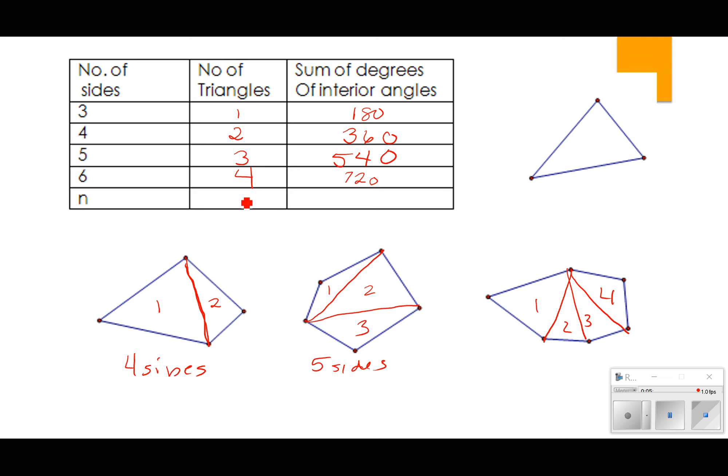So if you look at the pattern here, you notice that the number of triangles is always two less than the number of sides. So we can write that just represented by n minus 2. And then basically all I've done then is multiply the number of those triangles, or n minus 2 times 180 degrees. And that's how I can find the sum of all the interior angles inside a polygon.